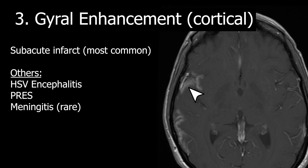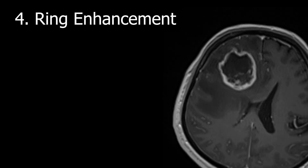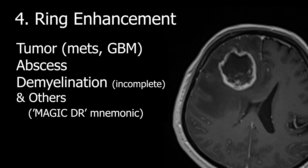We'll show examples of these in the course along with the associated differentials. Number four is ring enhancement in the brain itself. There is a long and classic differential here that is beyond the scope of this introductory video, but the most common and important to remember are tumor — including metastases and high-grade gliomas — abscess, and demyelination, which most commonly has an incomplete ring of enhancement and little to no mass effect, helping differentiate it from tumor. Others include post-radiation, contusion, and infarct.